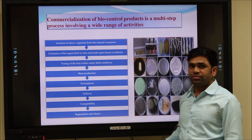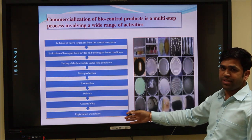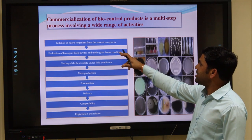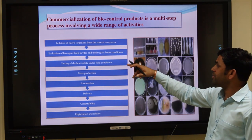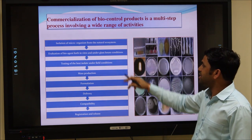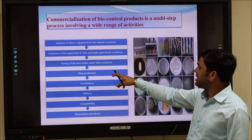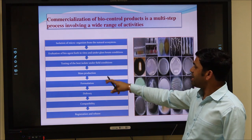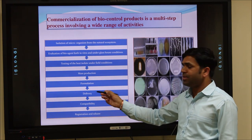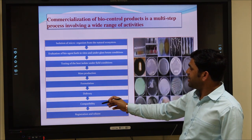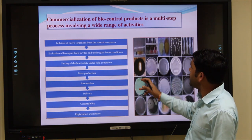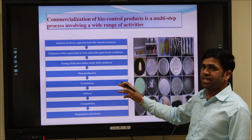If you want to commercialize your biocontrol agents, there are different steps to follow. First, isolate the microorganism or biocontrol agent from the natural ecosystem, especially from the soil. Then study it under in vitro or glasshouse conditions. After that, test your biocontrol agent in field conditions. Then carry out mass production in the laboratory, followed by preparation of formulation — whether liquid-based, carrier-based, or solid formulations. After formulation, proceed to delivery, check compatibility between biocontrol agents, and finally register and release your product into the market.